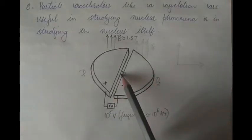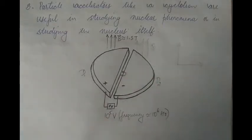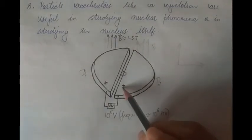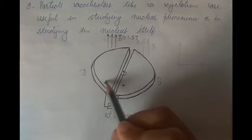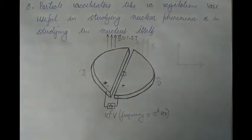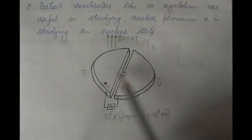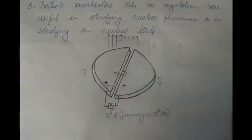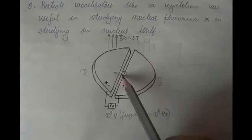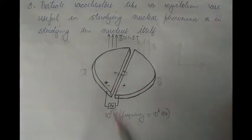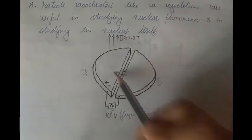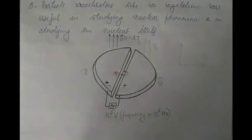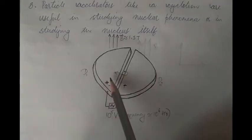The moment it comes in between the two D's, the cyclotron is so tuned that D2 now becomes positive and D1 becomes negative. The charged particle again experiences the electric field and, already possessing some velocity, moves into D1 with acceleration — so its velocity increases as it enters D1.